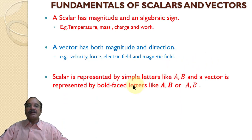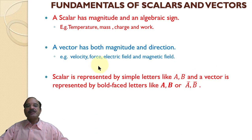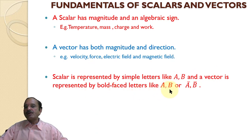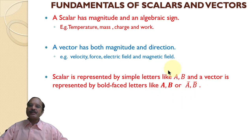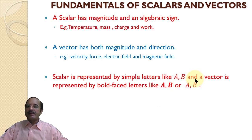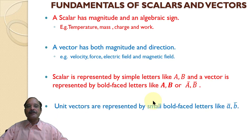A scalar is represented by simple letters like a, b. Whereas a vector is represented by bold letters — bold a or bold b — or using a bar notation: ā, b̄. In our subject, mostly while representing vectors a and b, we will represent them as ā and b̄.